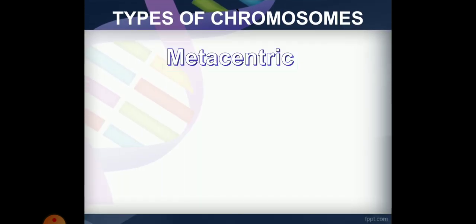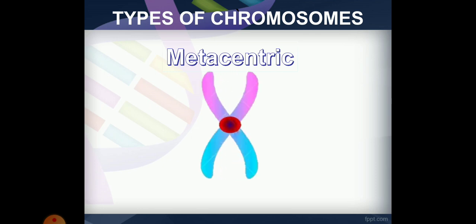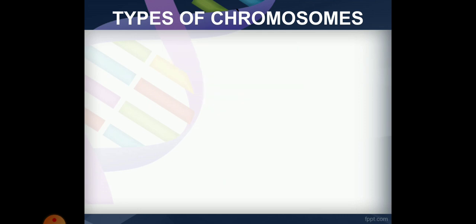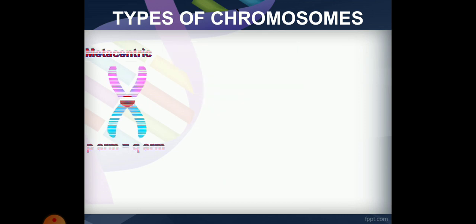Based on the position of the centromere, chromosomes are divided into types. The first type is the metacentric chromosome, where the centromere is in the middle and the P arm and Q arm are equal in size.